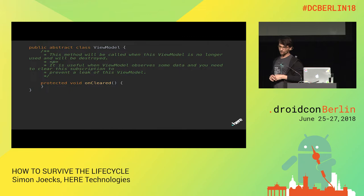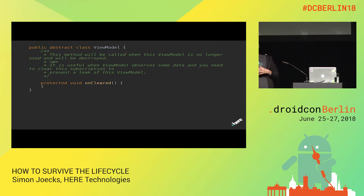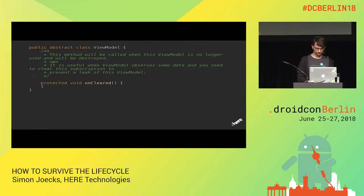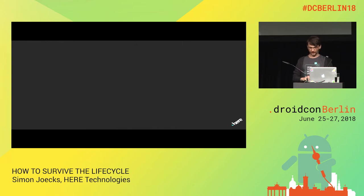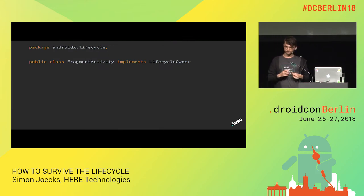Last but not least is the ViewModel, which basically holds everything together across activities or fragments when they are destroyed. A ViewModel is nothing more than basically a retained state where you can add a LiveData object or any kind of other objects that are going to be held across the lifecycle of an activity or fragment. So with these three or five simple classes, you can actually do really, really cool stuff. From AndroidX on, we have these lifecycles built in, and also with AppCompat 26 you get all of these lifecycle objects built into the standard libraries.